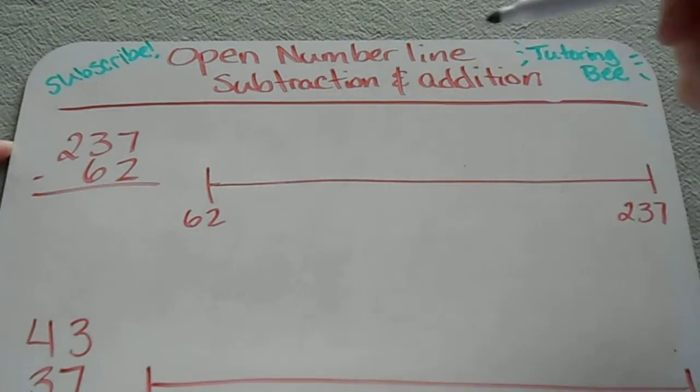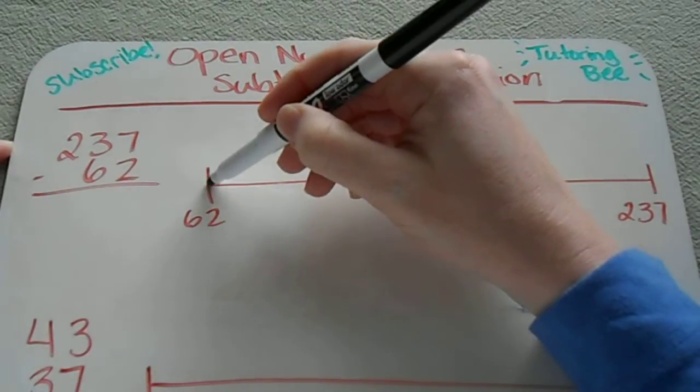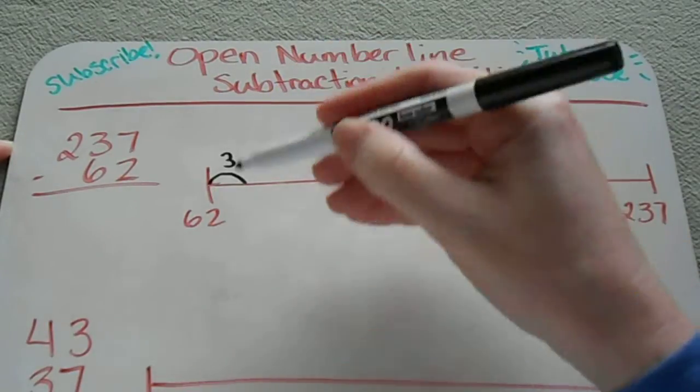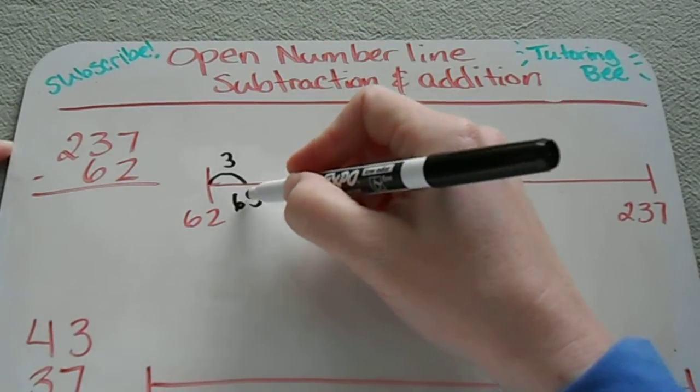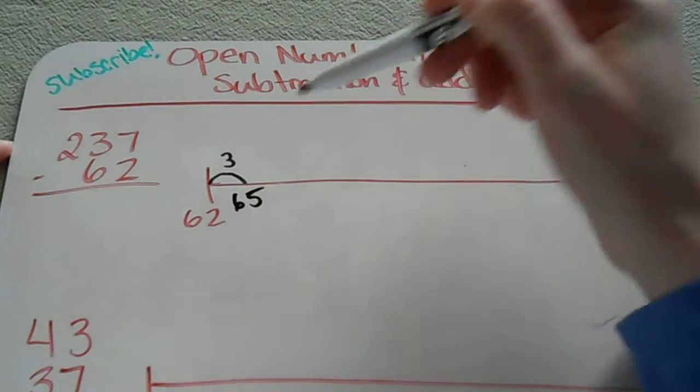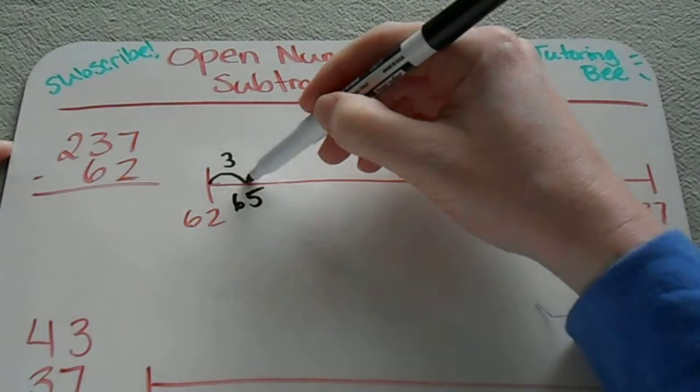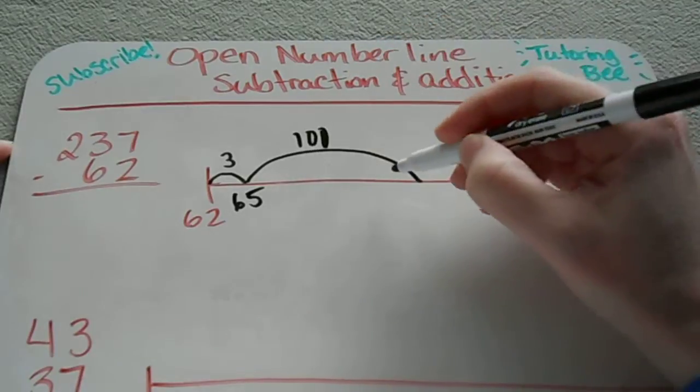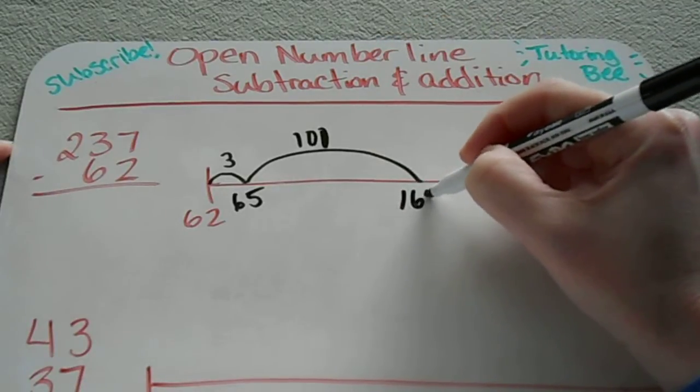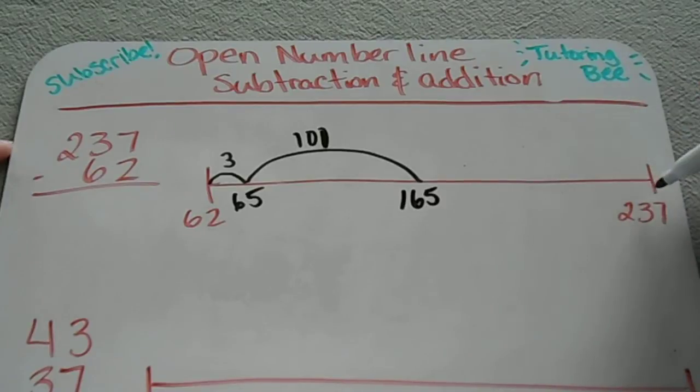If I start at 62 then I know that I can make a jump of 3 to get to 65, and then I can make another jump. I can make some larger jumps since I know my number is much larger that I need to get to. So I'm going to make a jump of 100. So that's going to be 165.